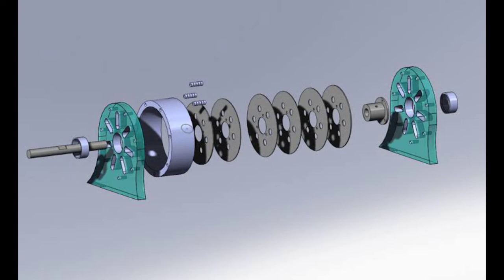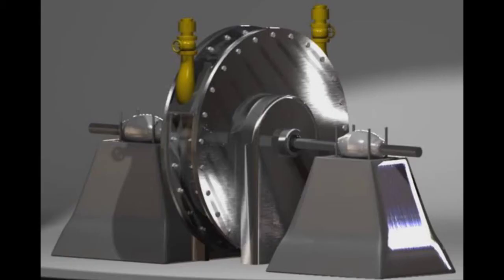As of 2016, the Tesla turbine has not seen widespread commercial use since its invention. The Tesla pump, however, has been commercially available since 1982 and is used to pump fluids that are abrasive, viscous, shear sensitive, contain solids, or are otherwise difficult to handle with other pumps.